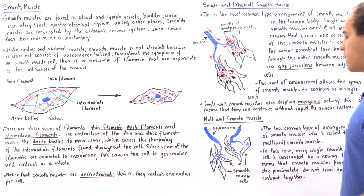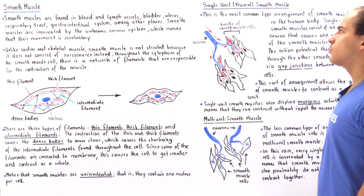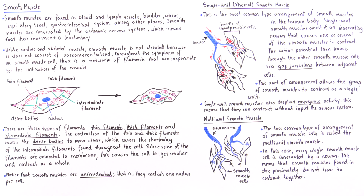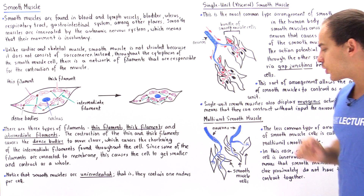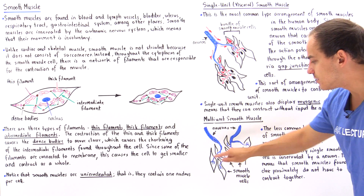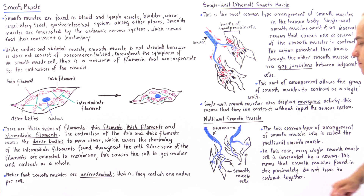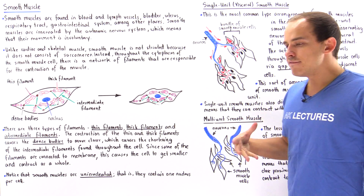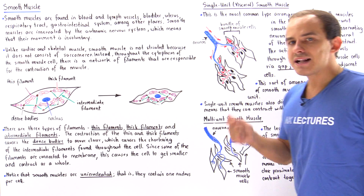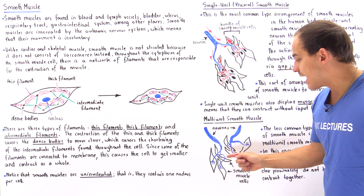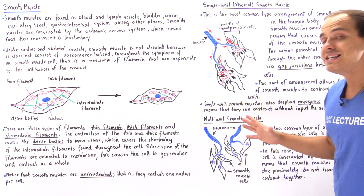The multi-unit smooth muscle is a less common type of arrangement. In this case, every single smooth muscle cell is innervated by a neuron, so each cell is connected to an axon terminal. If an action potential causes a group of cells to contract, that does not mean neighboring cells will also contract — the contraction of these smooth muscles is independent of the contraction of neighboring smooth muscles.